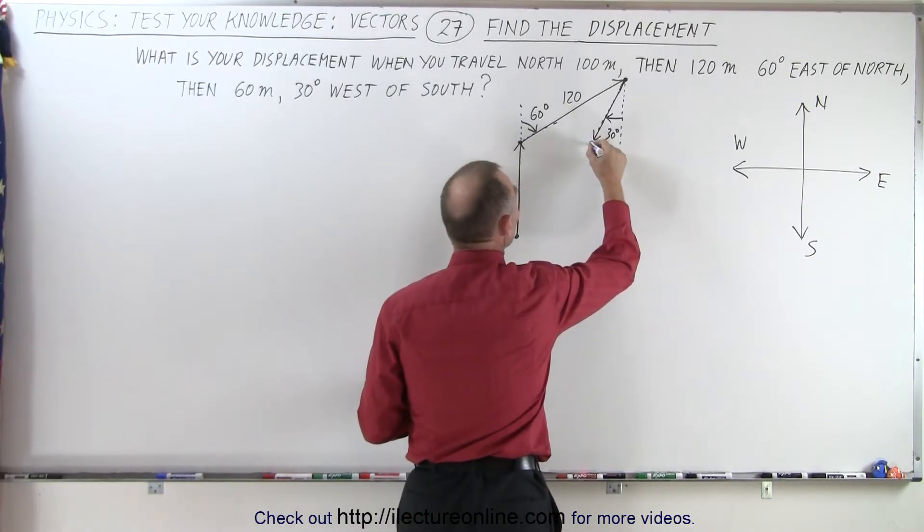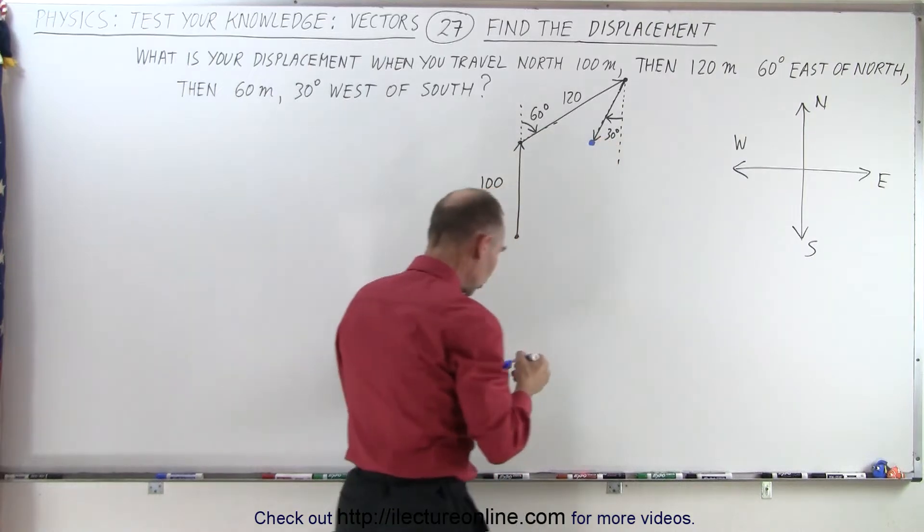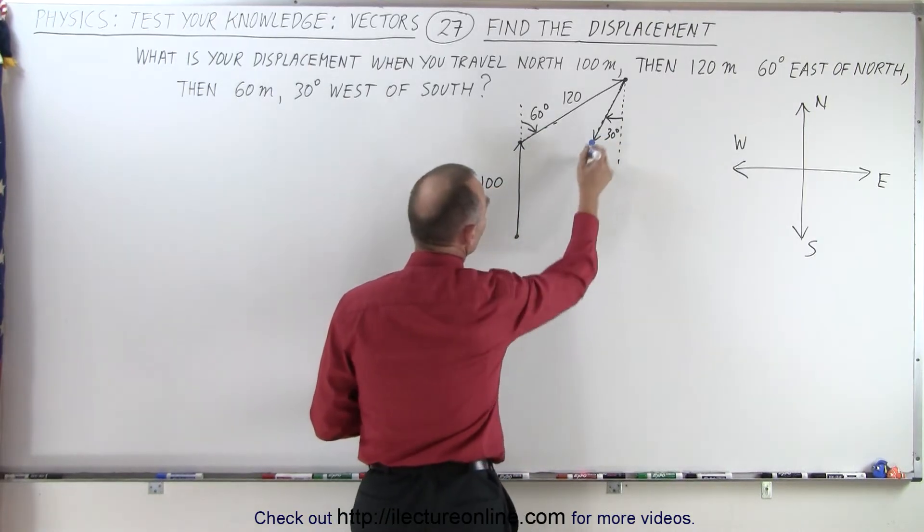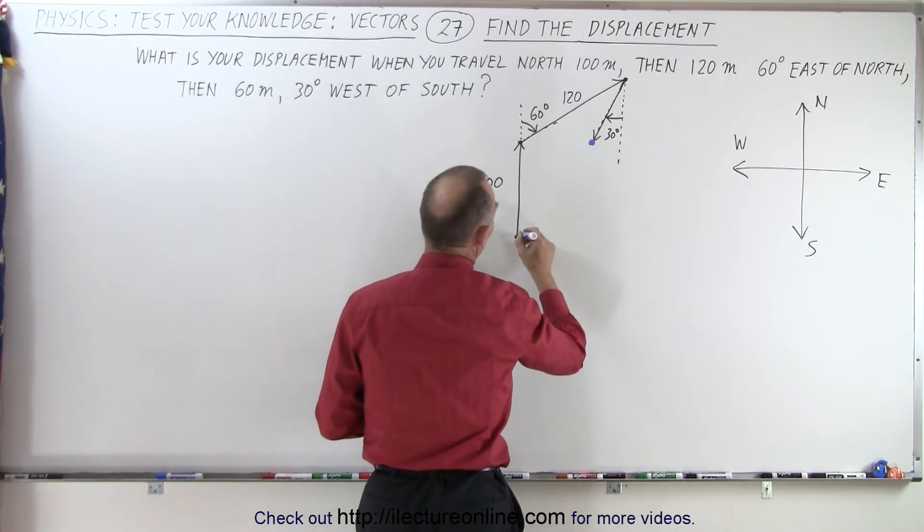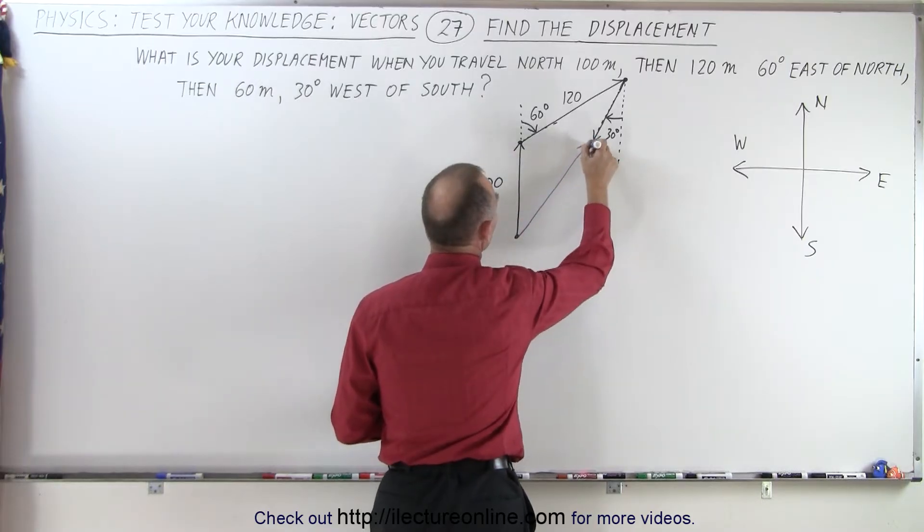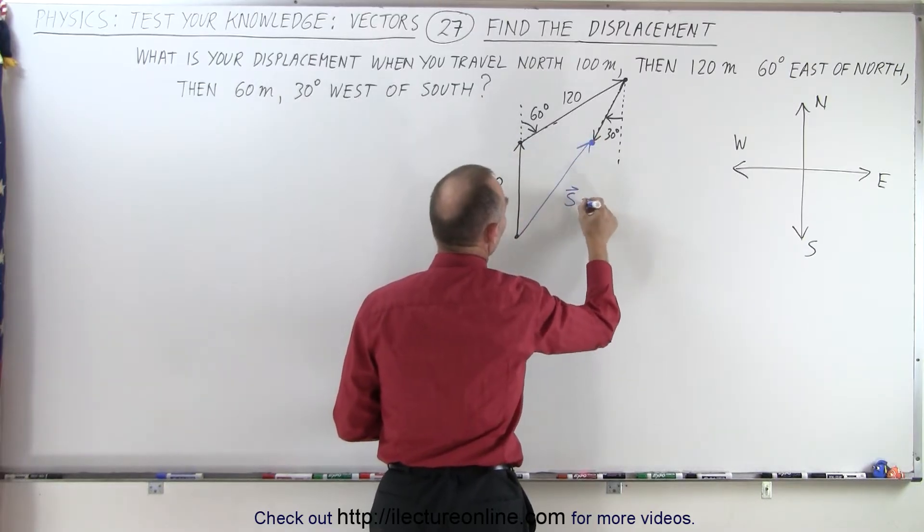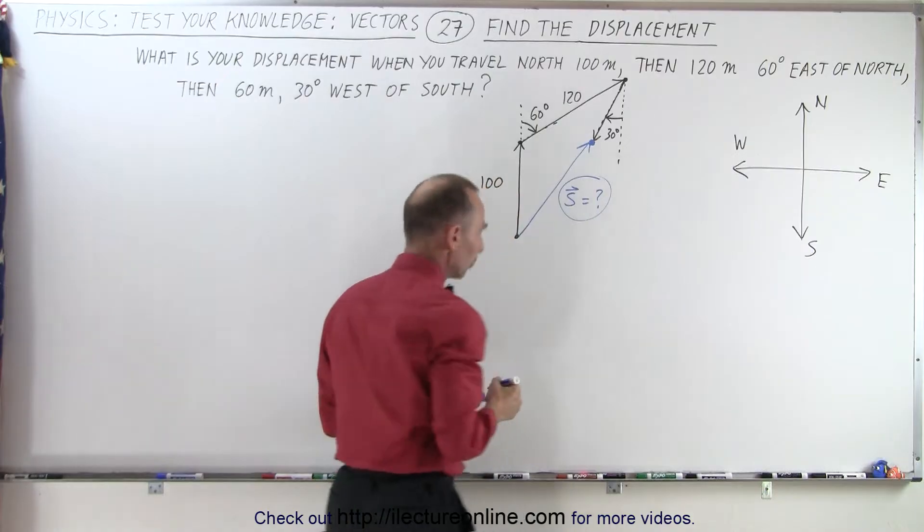So let's use a different color. There's your finishing point. And so the displacement would then be from here, from the starting point to the finish point, this here would be your displacement. Let's call that S. And the question is, what is that equal to?